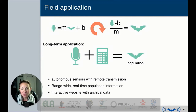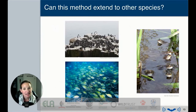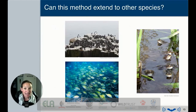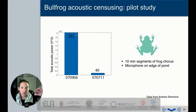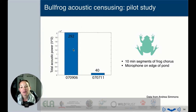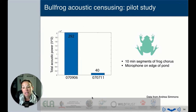The question then is: can this method be extended to other species — other vocal animals in patchy habitats? We focused our pilot effort on bullfrogs. We looked at recordings of bullfrog choruses, with a microphone on the edge of the pond and bullfrogs scattered throughout. Using the same analysis on 10-minute segments, we found that more calls chorusing corresponded with greater acoustic energy. I'm really excited about the potential to apply this to other species.